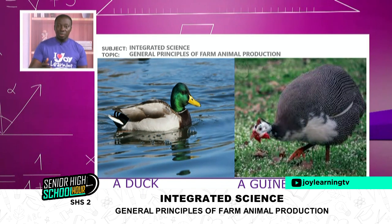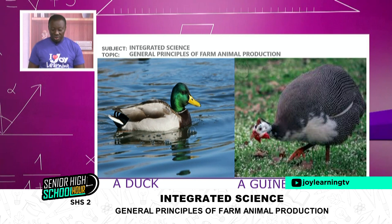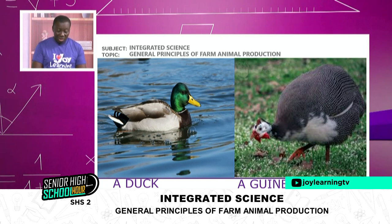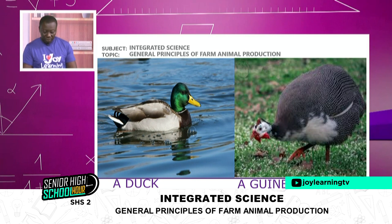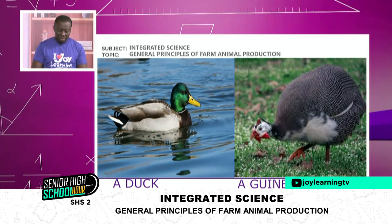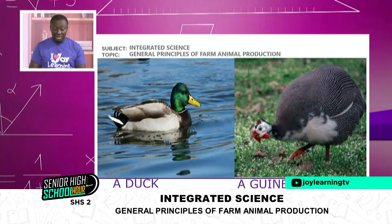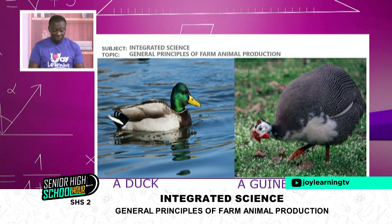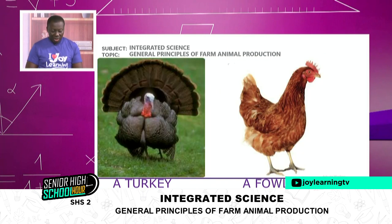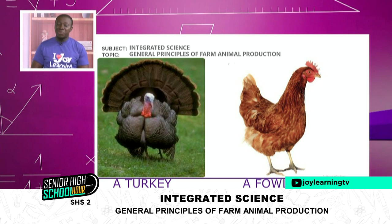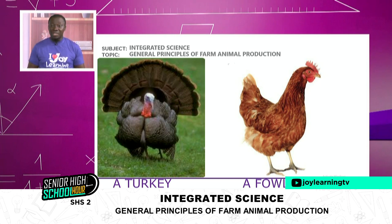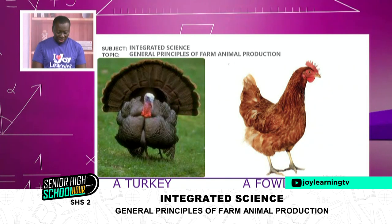On our screen we have a picture of a duck and a picture of a guinea fowl. We use them for their feathers, their meat, and in some cases like the ostrich, we even use their skin for leather. We have a turkey and a fowl as well. These animals help us during ceremonies and celebrations because we kill them to give us a source of meat and help with our protein requirements.